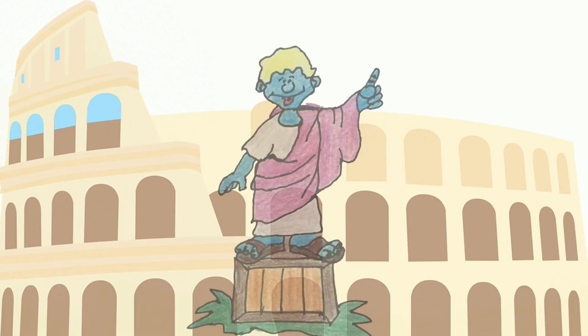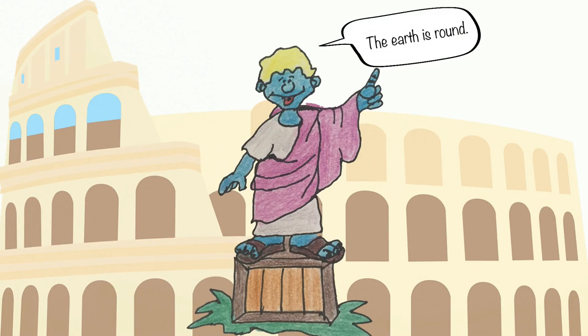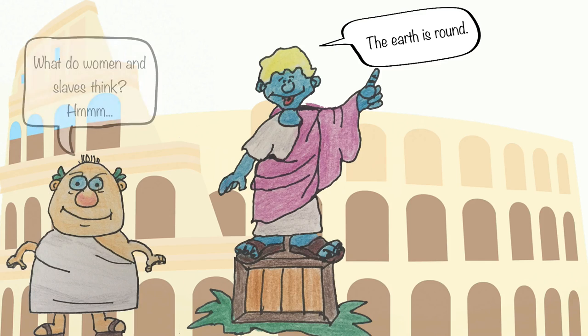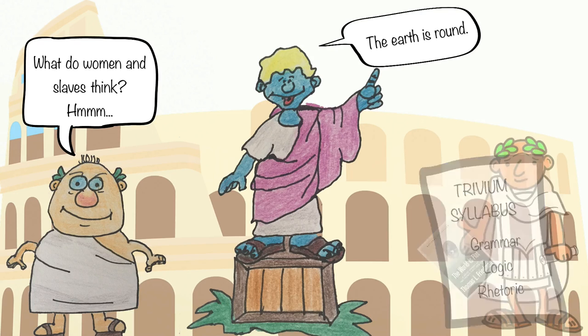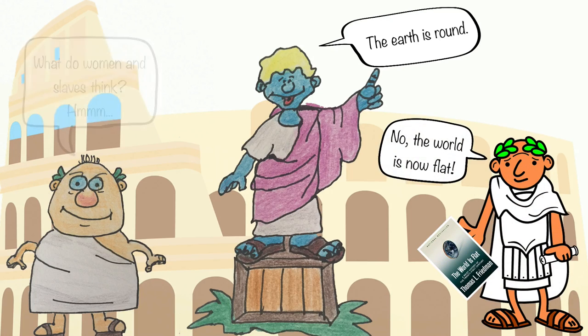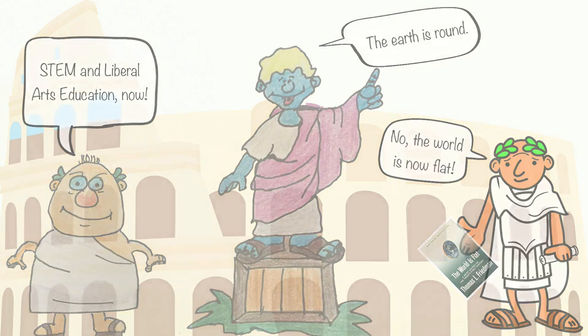In ancient Rome, they understood that to make their democracy work, they needed people to think, at least those who were eligible to vote. So learning the art of argumentation, rhetoric and logic was a big part of classical education. Even today, to be an effective citizen in a democracy, you need a dose of liberal arts education and thinking skills.